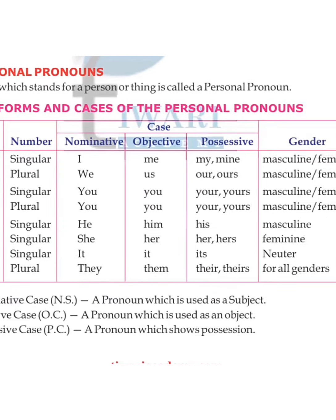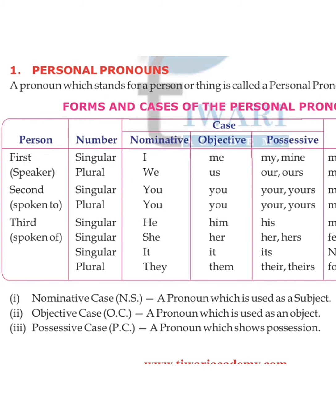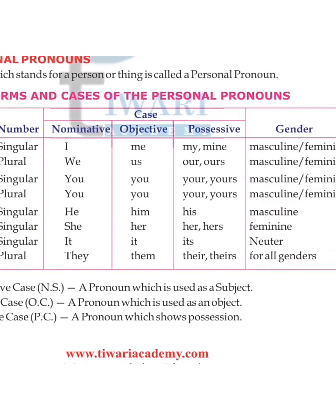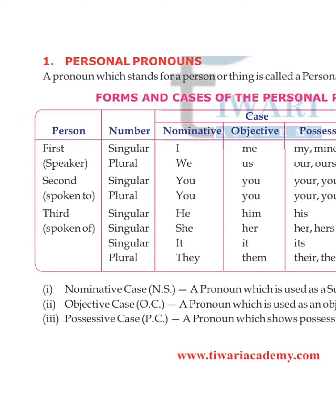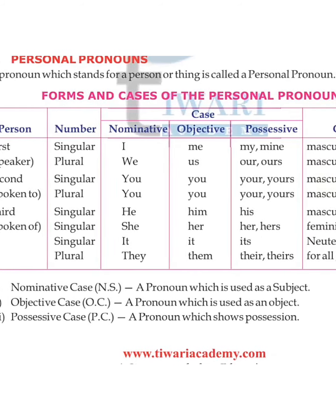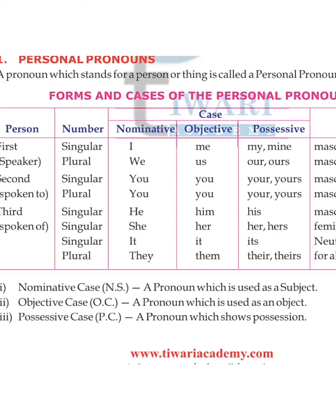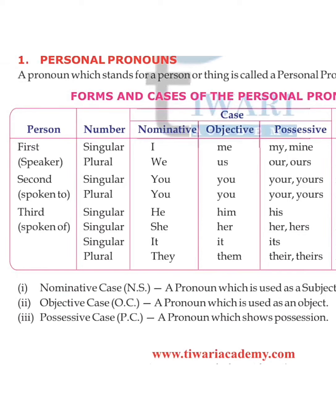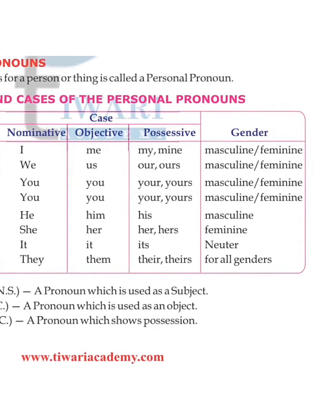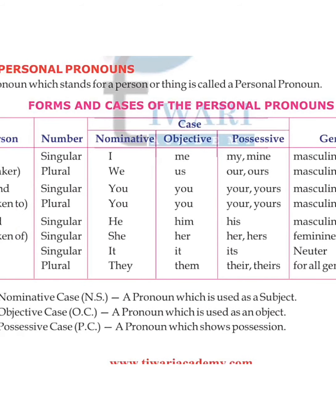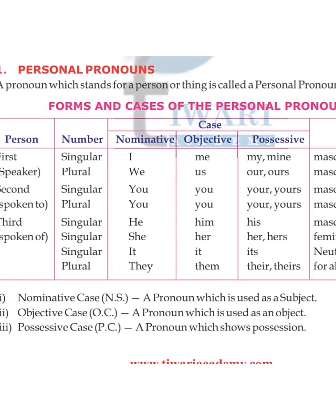For cases: first person — nominative 'I', objective 'me', possessive 'my/mine'. Second person — 'you', 'you', 'your/yours' — masculine and feminine both. Third person — he: objective 'him', possessive 'his'; she: objective 'her', possessive 'hers'; it: its; plural they: objective 'them', possessive 'their/theirs'.